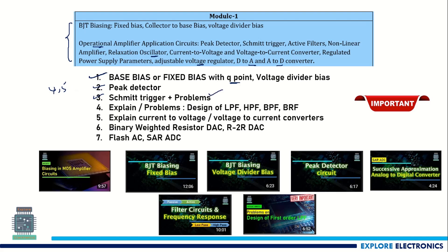You may get problems on Schmitt trigger. For active filters, we have low pass filter, high pass filter, band pass, and band rejection filters. You need to learn the circuits — out of these four, you will get one question for sure. Since these are active filters, we write the circuit using op-amps. They may also ask design problems such as 'design a first order low pass filter,' requiring you to find RC values or calculate frequency.